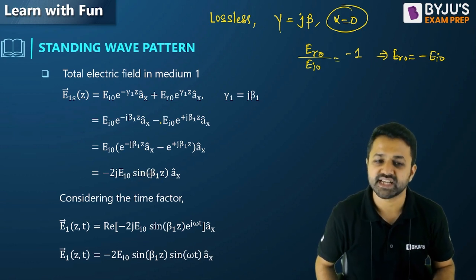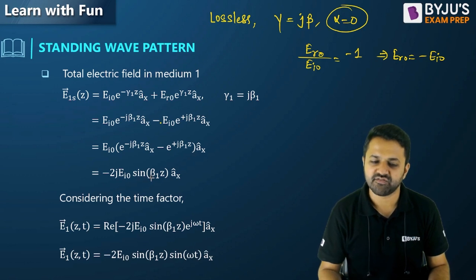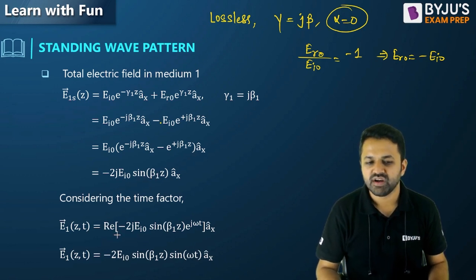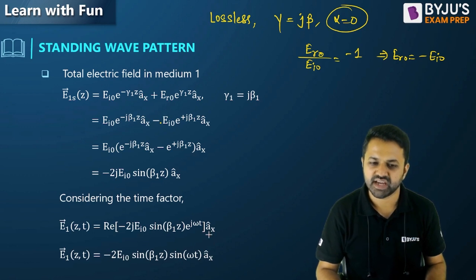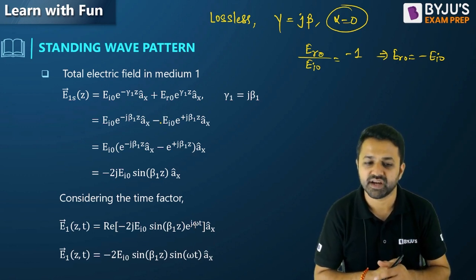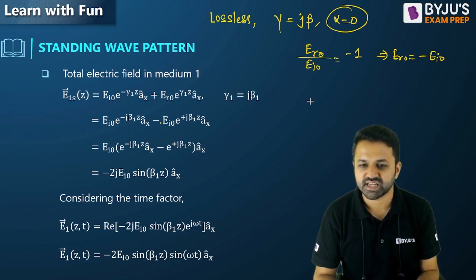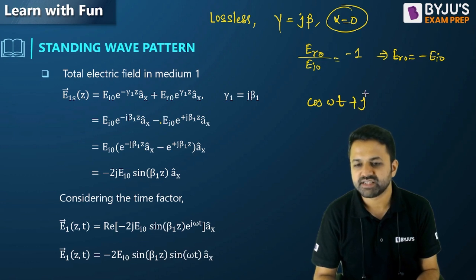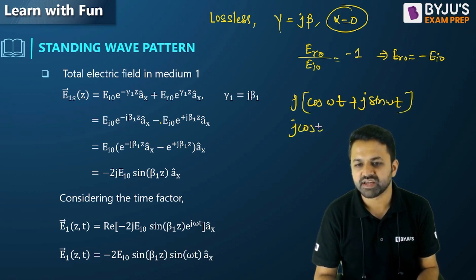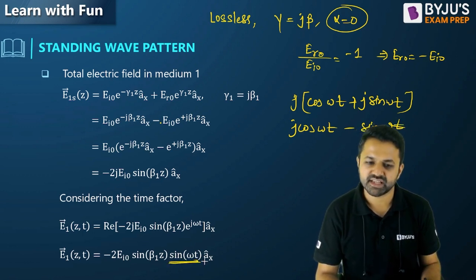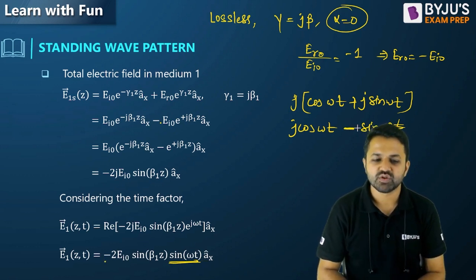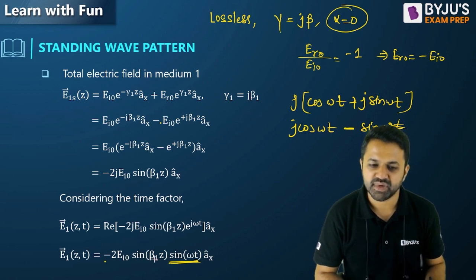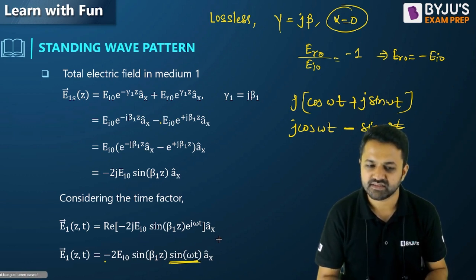Substituting and converting to sine/cosine form, the total field becomes −2j·E_i0·sin(β1z) x̂. Including the time factor, we take the real part of −2j·E_i0·sin(β1z)·e^(jωt) x̂. Multiplying e^(jωt) = cos(ωt) + j·sin(ωt) by j makes the sine term the real part, giving the final expression: E = −2·E_i0·sin(β1z)·sin(ωt) x̂.